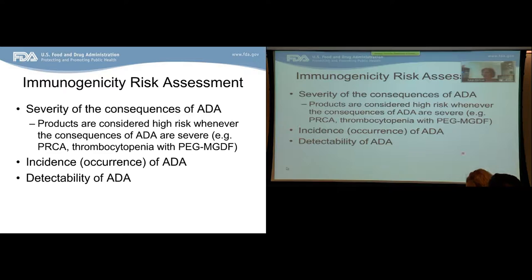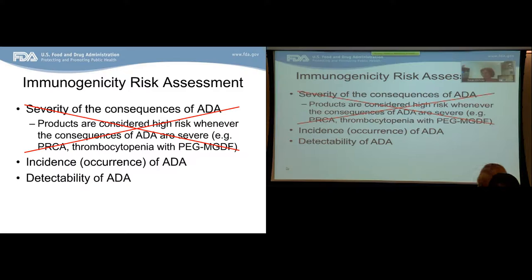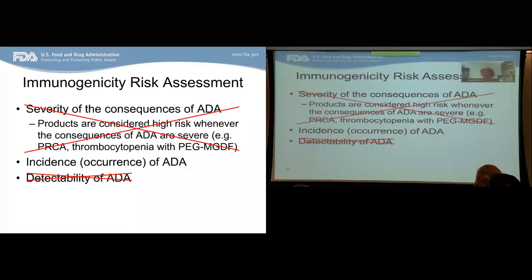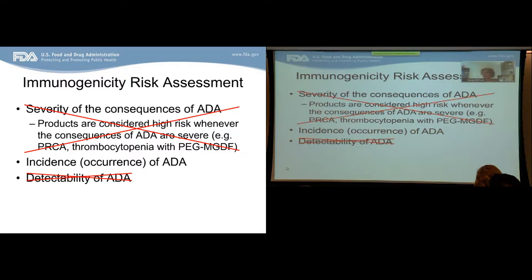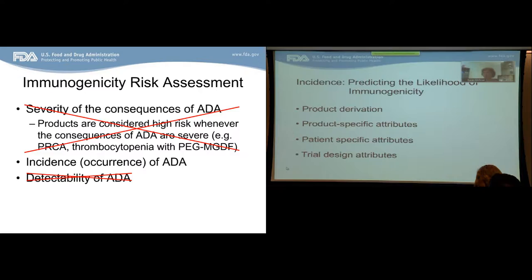The other component of an immunogenicity risk assessment is the incidence of anti-drug antibody formation — looking at how frequently they occur in the population. Finally, we look at the detectability of anti-drug antibodies using assays, and whether we can develop good assays to detect them. Today we're not going to talk about detectability, but we will be talking about predicting the likelihood that anti-drug antibodies will occur.